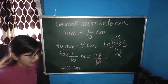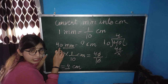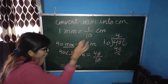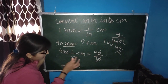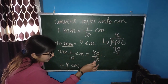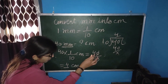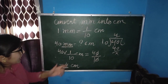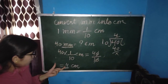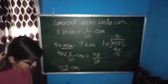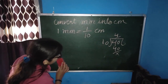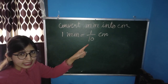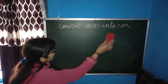To summarize: we wrote 40 mm, then wrote the value of 1 mm as 1 by 10 cm, giving us 40 by 10. Cancelling the zeros, we get 4. So how many cm in 40 mm? The answer is 4 cm. Remember this formula: 1 mm is equal to 1 by 10 cm.